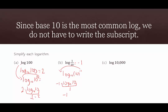In our last base-10 example, we have log base 10 of 10,000. We rewrite this as log base 10 of 10 to the fourth power, giving us 4 times log base 10 of 10. Log base 10 of 10 is 1, and 4 times 1 is 4. So this simplifies to 4.